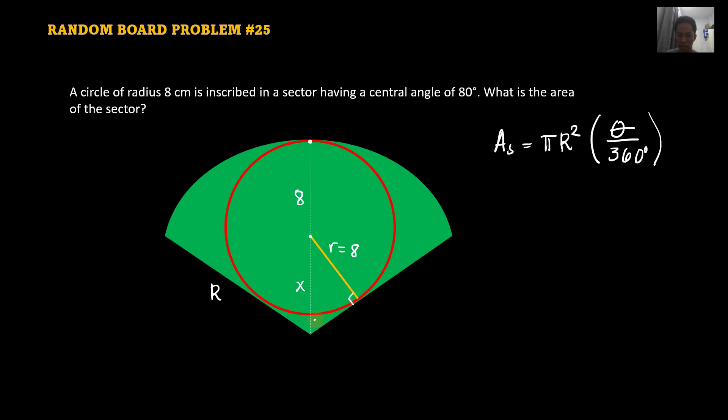And this angle here is actually 40 degrees. That is one half of 80 degrees. Because our central angle is 80. So half of 80 is 40. So this is just 40 degrees here. So we can say that the radius, the larger one, the radius of the sector is actually equal to 8 plus x.